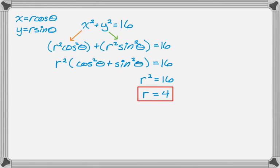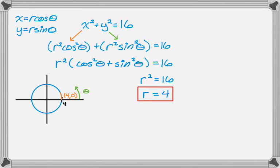You might wonder about r equals negative 4 — that's valid but less traditional. For r equals 4, theta increases counterclockwise starting at the point (4, 0). We trace through (4, pi/2), (4, pi), (4, 3pi/2), ending back at (4, 2pi), which is the same point as (4, 0) since polar representations are not unique. It takes 2 pi to complete the circle.